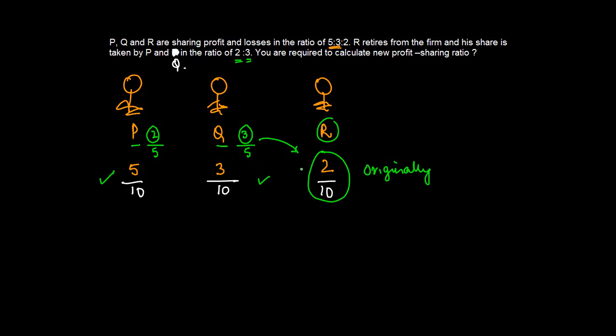How much does he get from R? So P will get 2/5 of share of R. How much is R's share? 2 by 10. And Q will get how much? He will get 3/5 of share of R, which is 2 by 10.